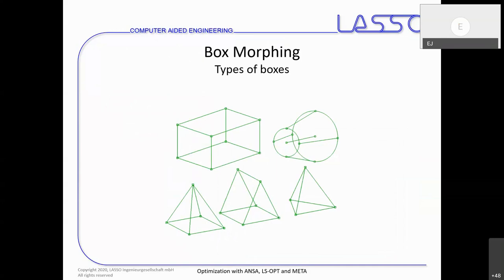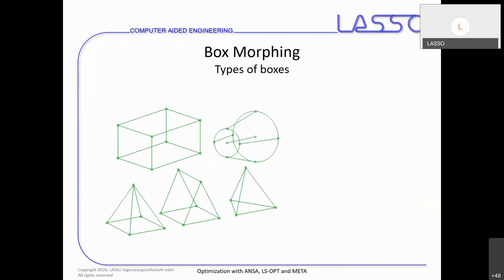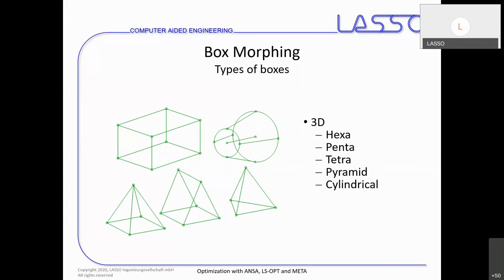Let's look at the different types of boxes available for box morphing. We have different types of 3D boxes: hexahedral, pentahedral, and tetrahedral — like typical solid FE elements. But also some cylindrical boxes, for example for modifying pipes.